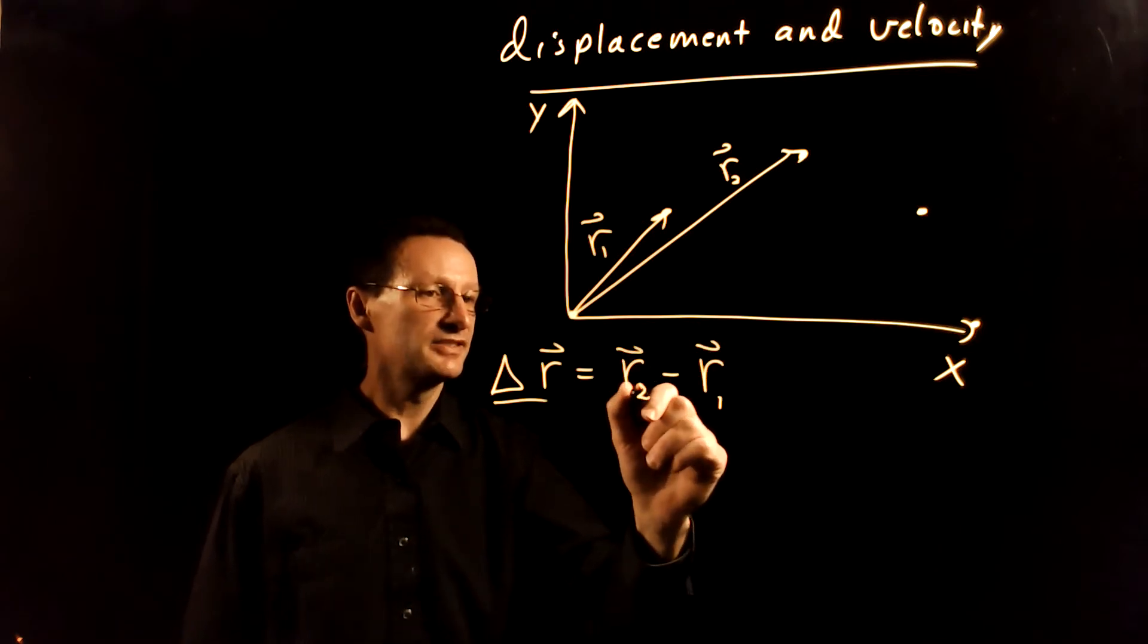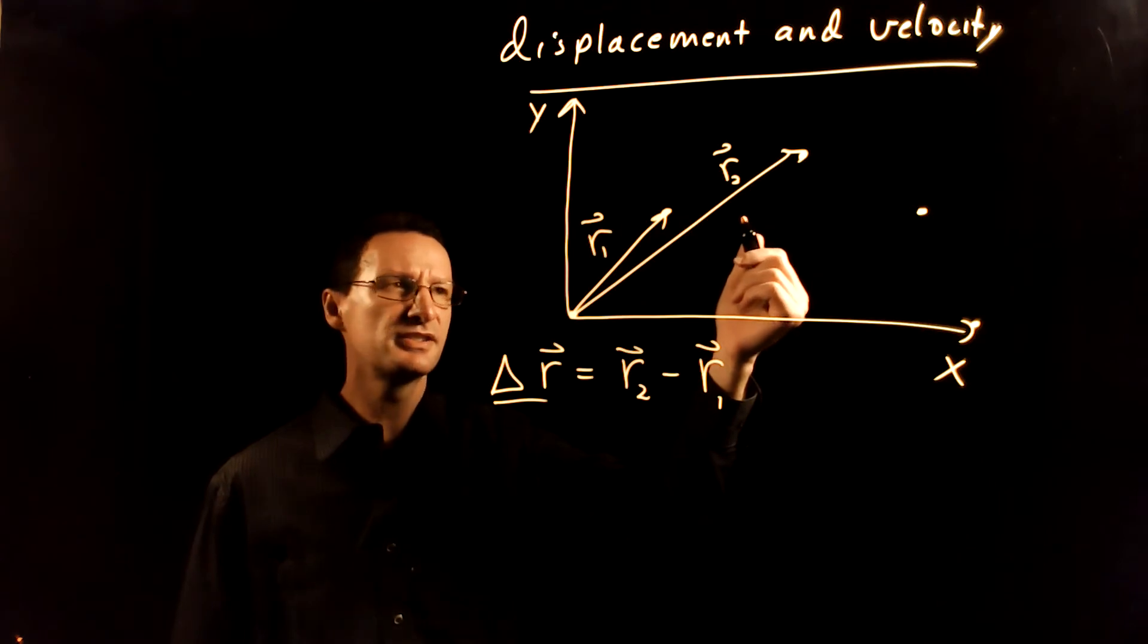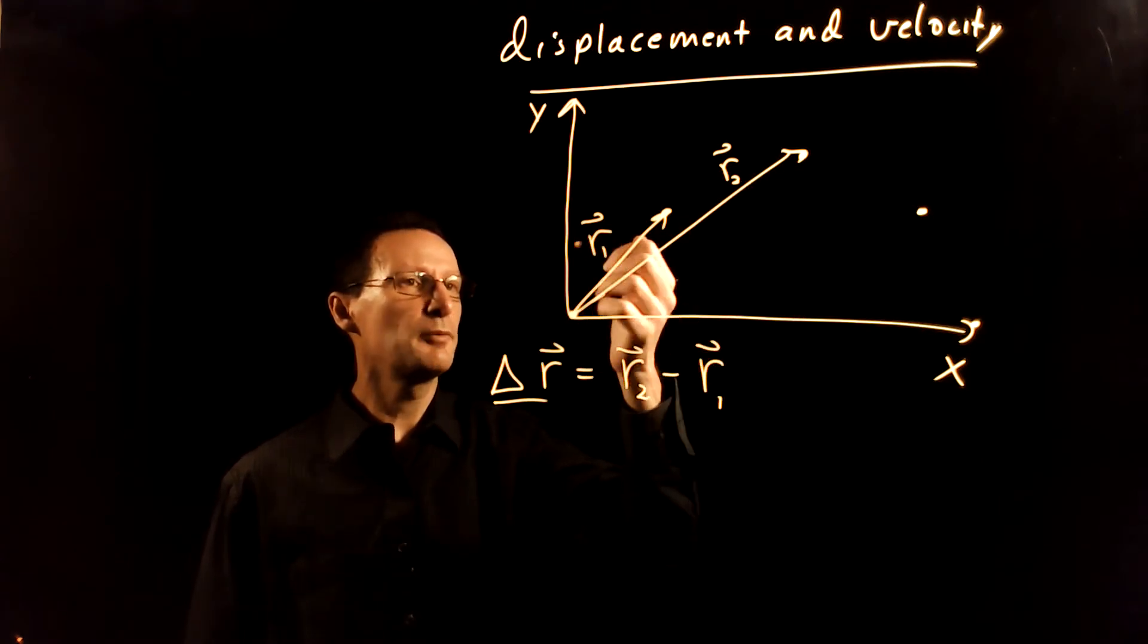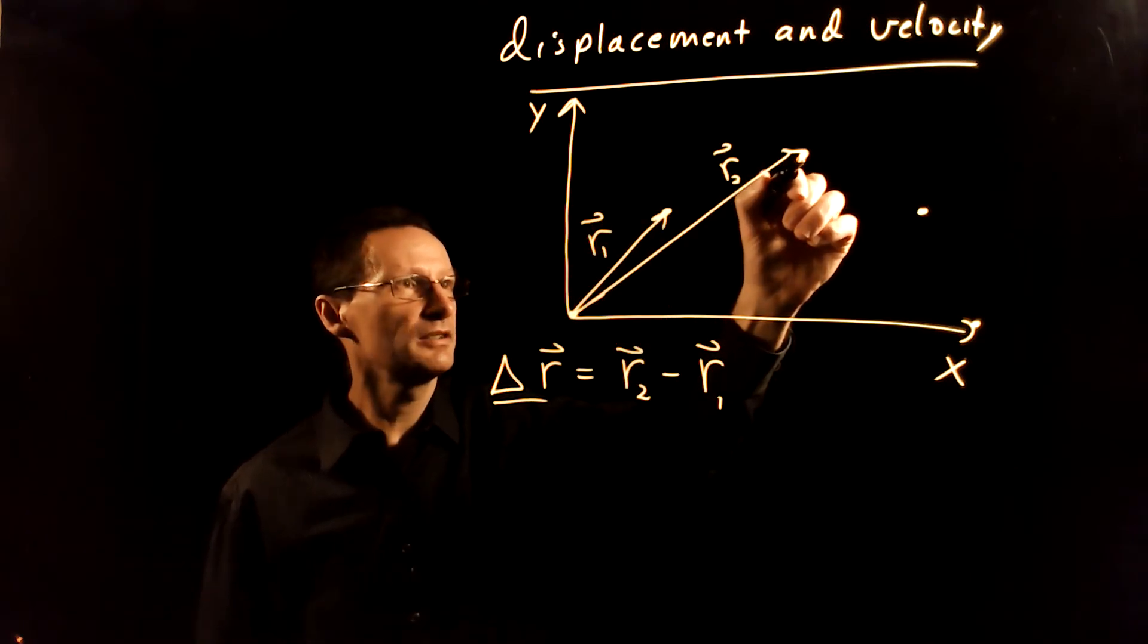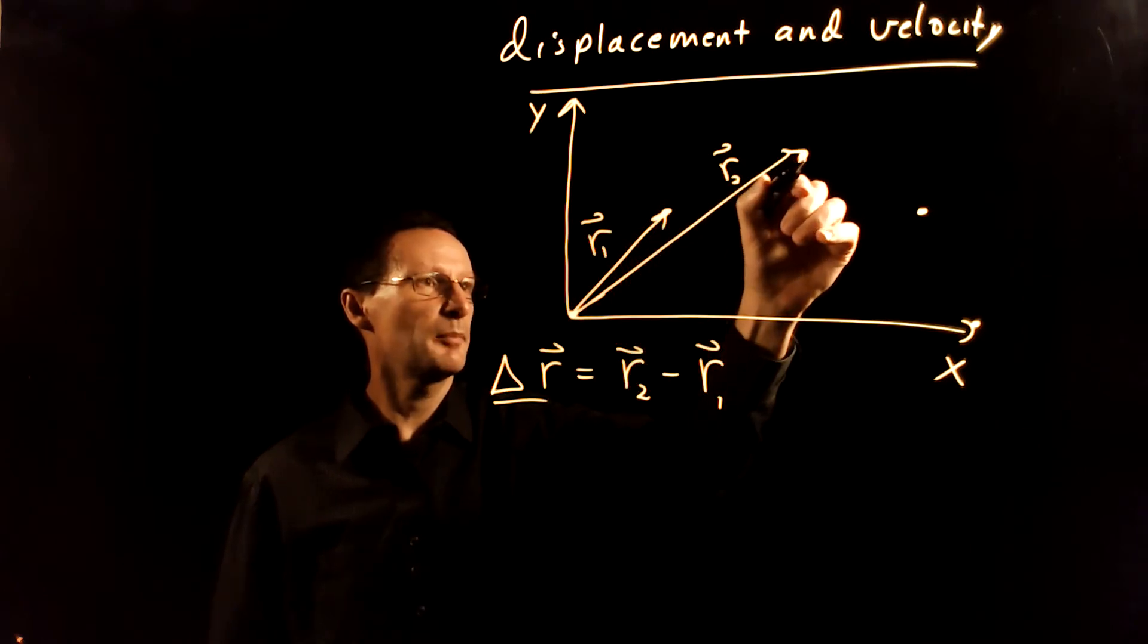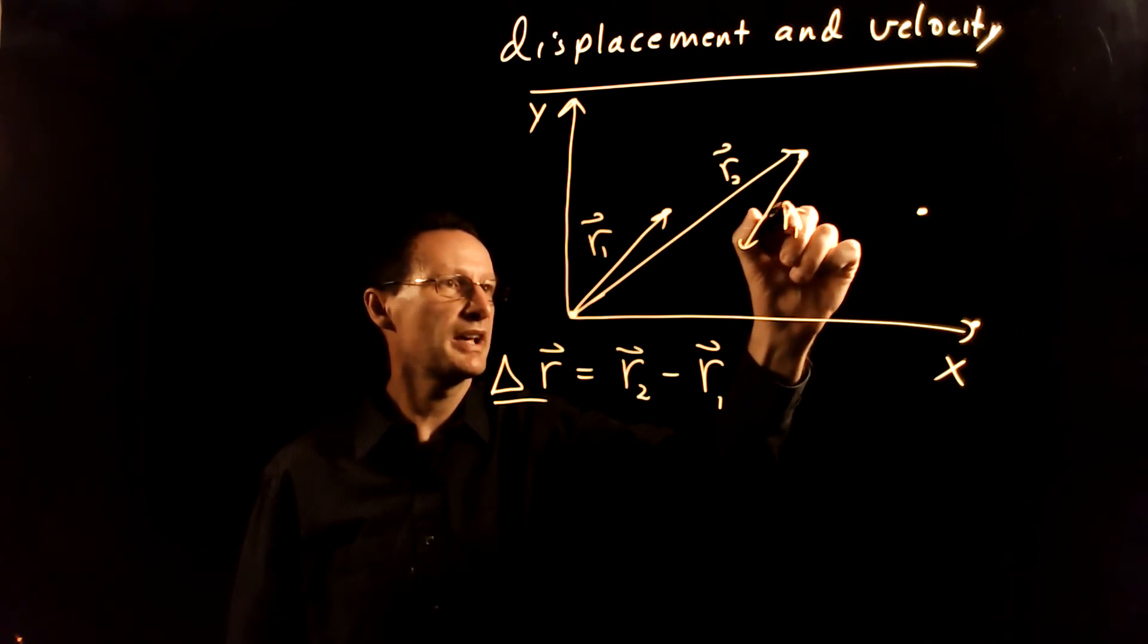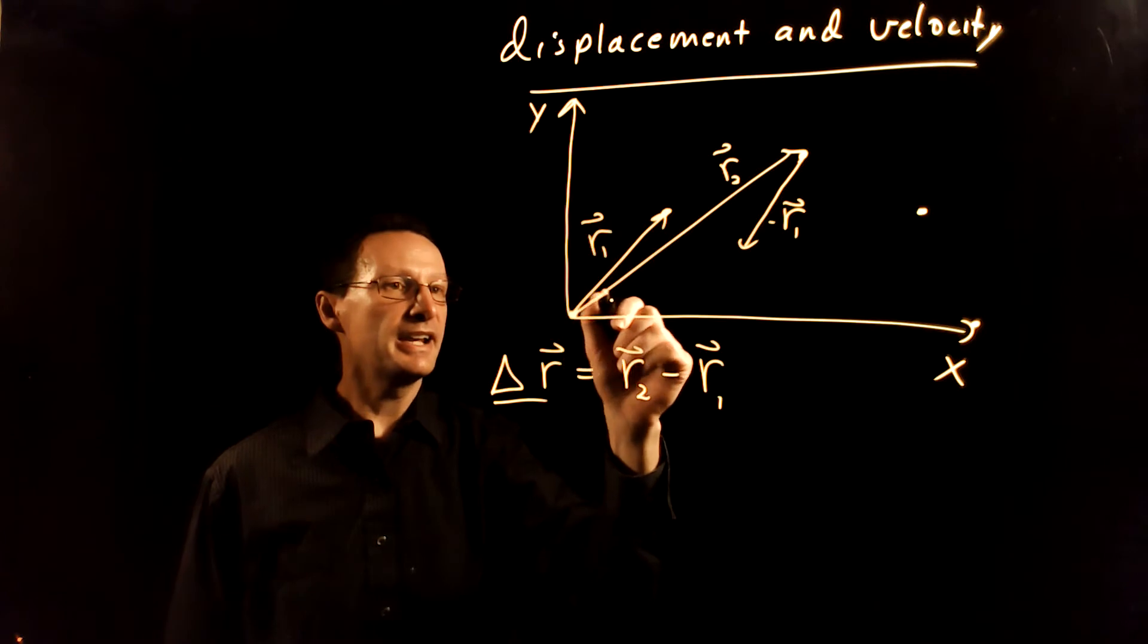We want to subtract these two using the tip-to-tail method. So we start with R2 like that, and then we take R1 and flip it backwards and put it at the tail of R2. Let me get that about right here. So that negative R1 looks like that.